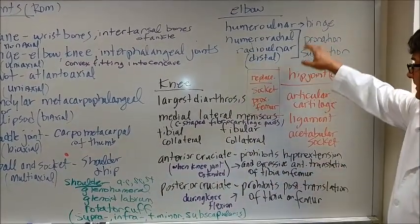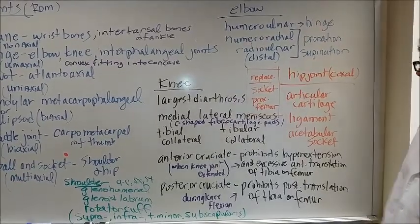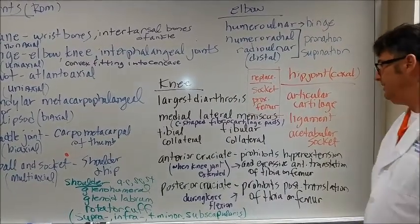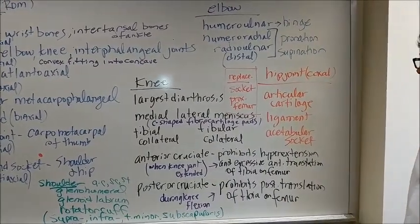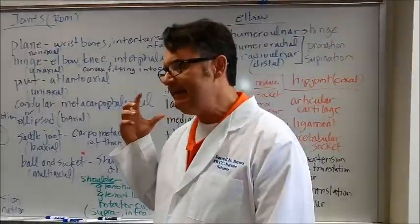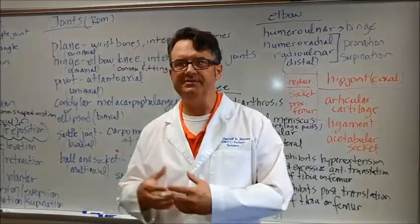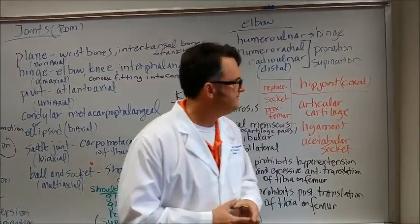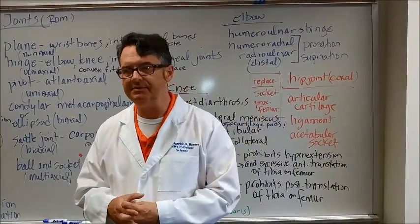I think I've talked about the elbow joint pretty nicely. Let's talk about the hip joint. The hip joint is called the coxal joint. I call the hip joint the coxofemoral joint, and some people just call it the coxal joint.